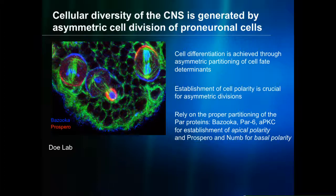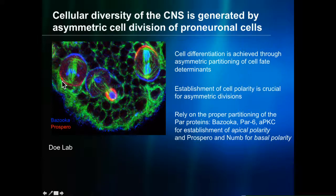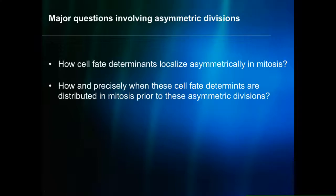These par proteins can be distributed to opposite ends of the cell during mitosis. Shown in blue is the tight junction protein Bazooka, and shown in red is the transcription factor Prospero, found in neuroblasts going through an asymmetric division. Major questions are: how are cell fate determinants partitioned asymmetrically during mitosis, and precisely when are they distributed prior to these divisions? What is the signal that sets up an asymmetric division?